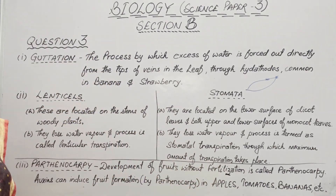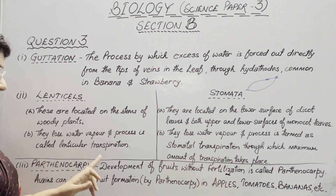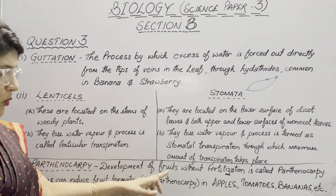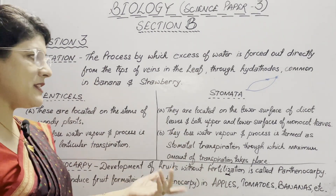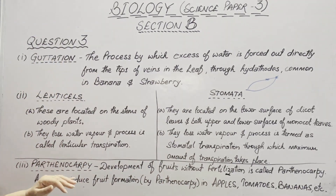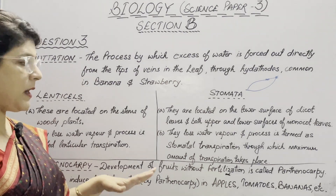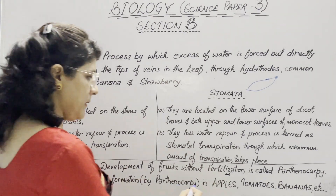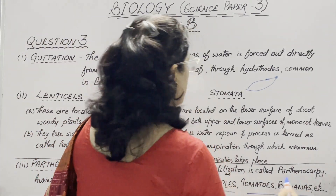The third part is to define Parthenocarpy and give one example. Development of fruits without fertilization is called Parthenocarpy. Plant hormones like auxins can induce fruit formation by Parthenocarpy in apples, tomatoes, and bananas.